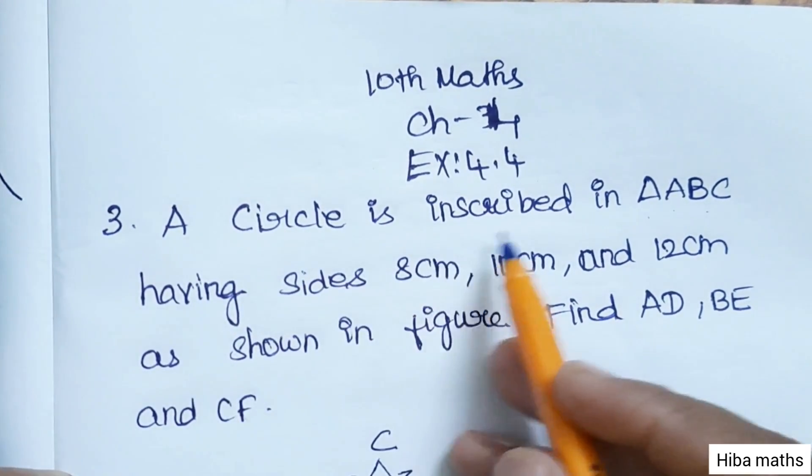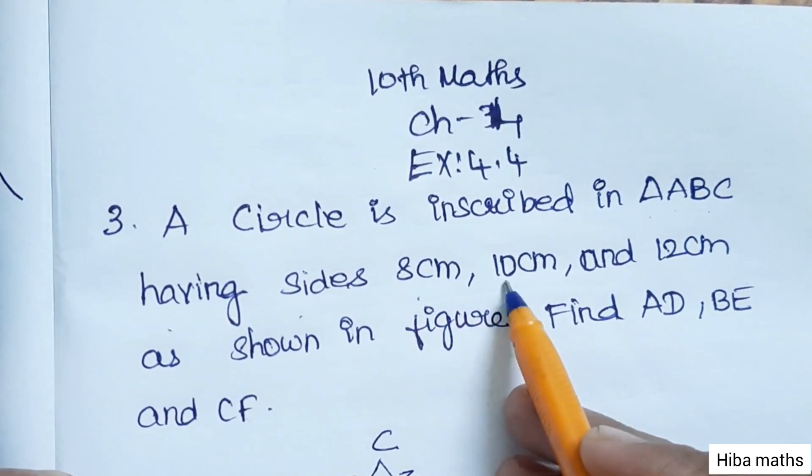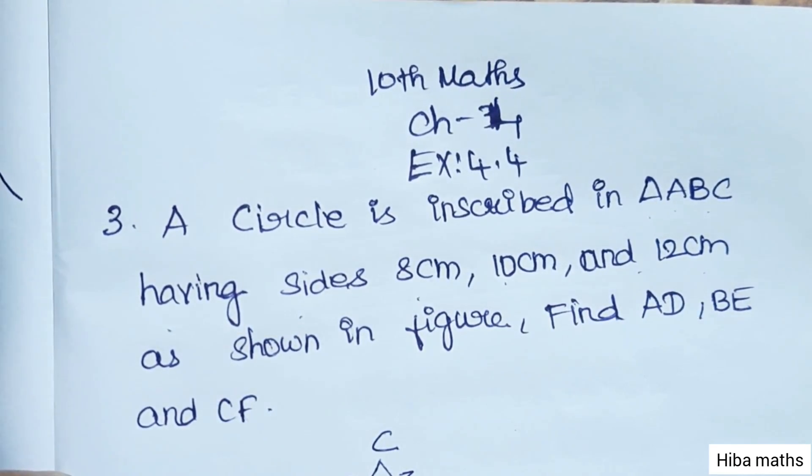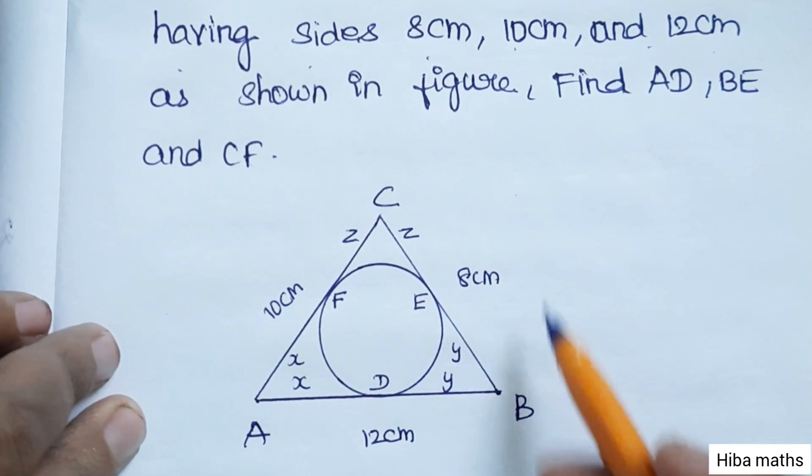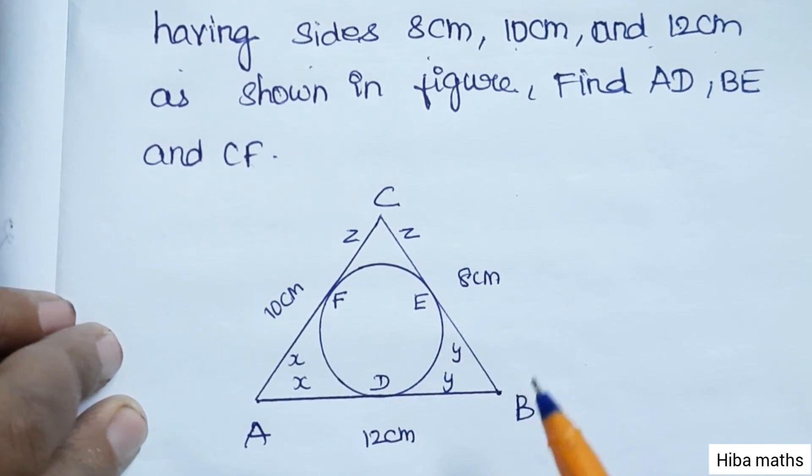A circle is inscribed in triangle ABC having sides 8cm, 10cm and 12cm. The diagram is a triangle ABC with a circle. AB is 12, BC is 8, CA is 10.